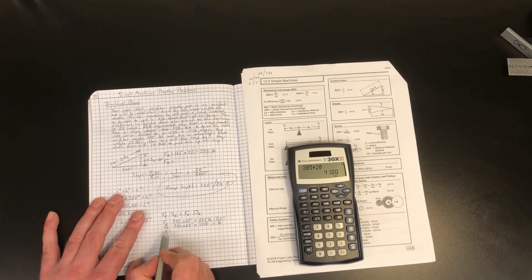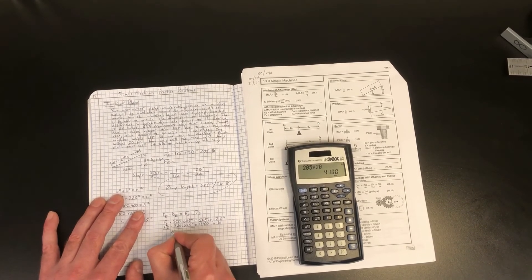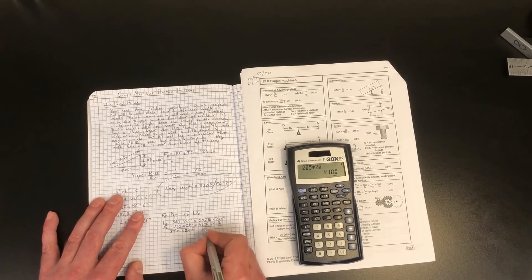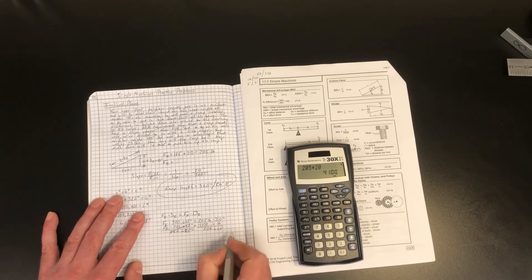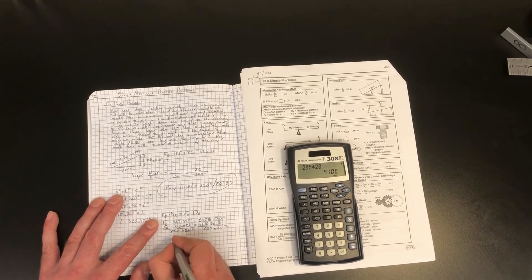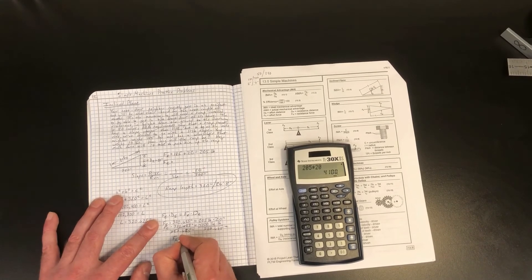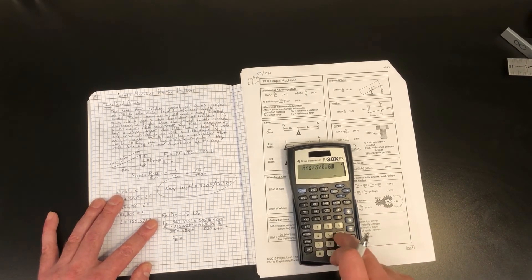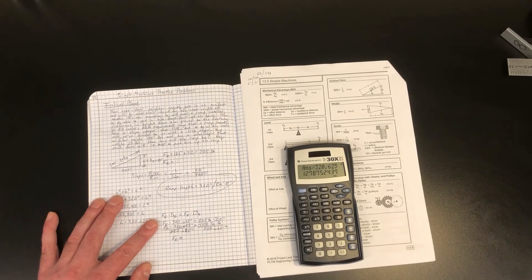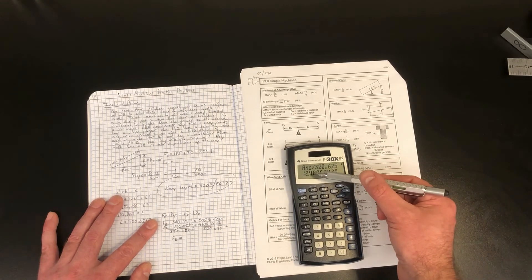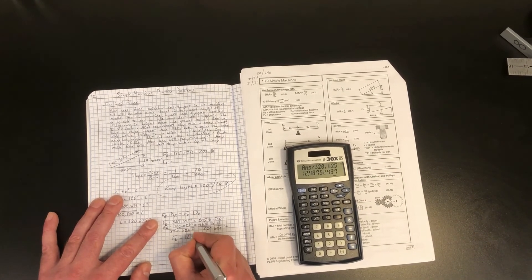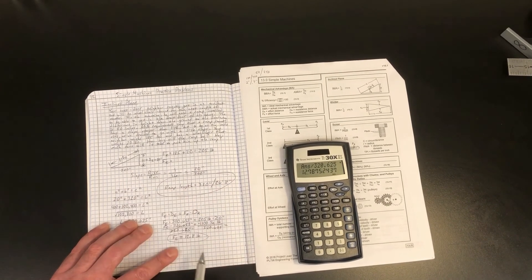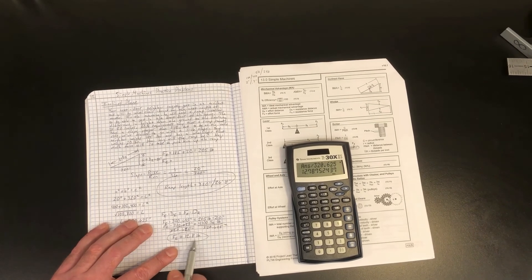So to simplify this further and figure out what our effort force is, we're going to divide both sides by 320 and 5 eighths. And that's going to cancel out on this side. And over here, inches are going to cancel out, so we know that our answer for our effort force is going to be in pounds. So 4,100 inch-pounds divided by 320.625, or 320 and 5 eighths, equals 12.78, and we'll just round this to 12.8 pounds. So our ideal effort force for pushing your 205-pound neighbor up this ramp is 12.8 pounds, just about 13 pounds of effort force.